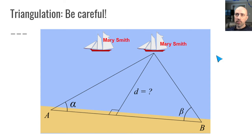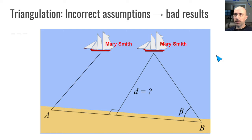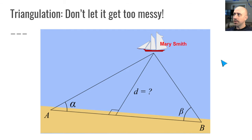Another parallel is that we do have to be careful when we're triangulating. We have to be sure that we know what we're measuring and we can't be careless or we're going to get bad results. Obviously, if we draw the lines in the wrong place and make bad assumptions, we're going to come up with nonsense. But beyond that, there aren't really any similarities. The triangulation that we do for family history is not based in math.